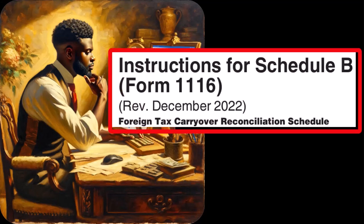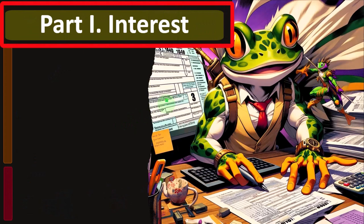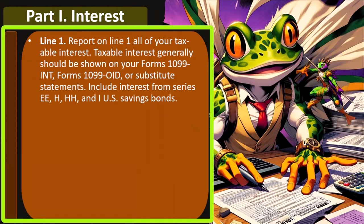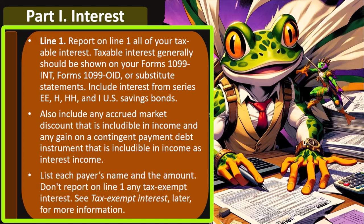Instructions for Schedule B, Form 1116 — this is the foreign tax carryover reconciliation schedule. Part 1, Interest, Line 1: report all of your taxable interest. Taxable interest generally should be shown on Form 1099-INT, Form 1099-OID, or substitute statements. Include interest from the Series EE, H, HH, and I U.S. savings bonds. Also include any accrued market discount that is included in income, and any gain on a contingent payment debt instrument that is includable in income as interest income.